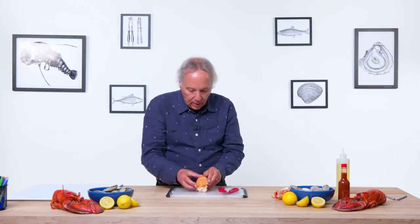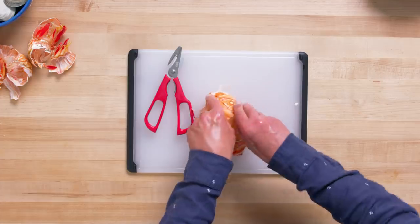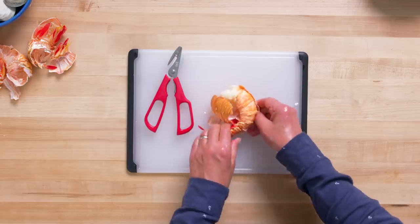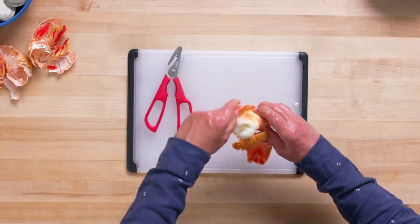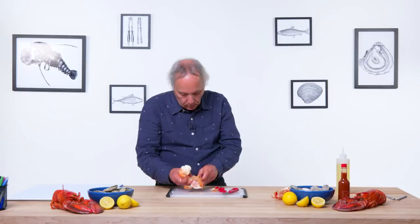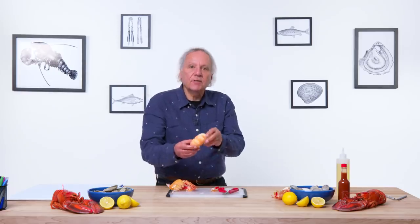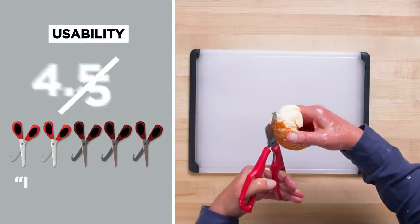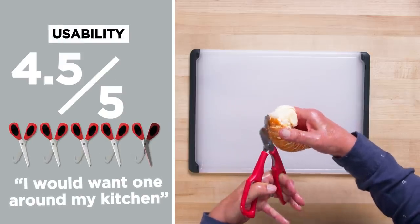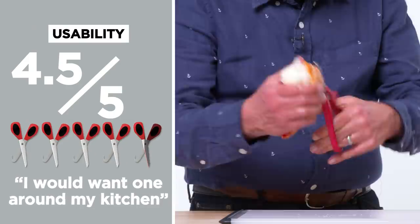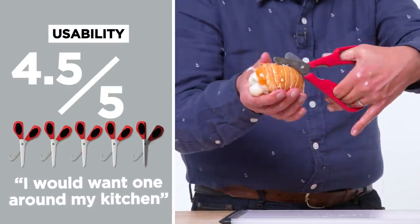See if I can get into the tail like I did before. Pull the halves apart. Really only need to pull one half apart. And let's see if I can pull the lobster meat out. And yeah, that was as successful as before. In terms of usability, I would rate this a 4.5, because I think it is very usable. I would definitely want one around my kitchen. It's almost there. I don't think it's fully, fully there.